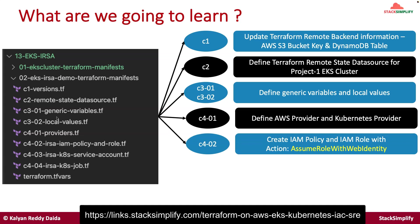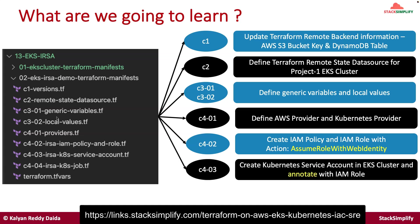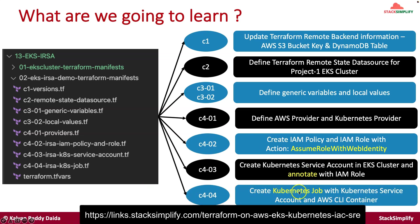This IAM role will be defined with the action as assume role with web identity and additional information. This is going to be a tricky one that we have implemented successfully using Terraform, and we will review that in detail. We will also define the Kubernetes service account and annotate it with the IAM role created in C4 02. Finally in C4 04, we will create the Kubernetes job with the Kubernetes service account and the AWS CLI container. All these things we are going to do in our upcoming lecture. See you in the next lecture — bye bye.